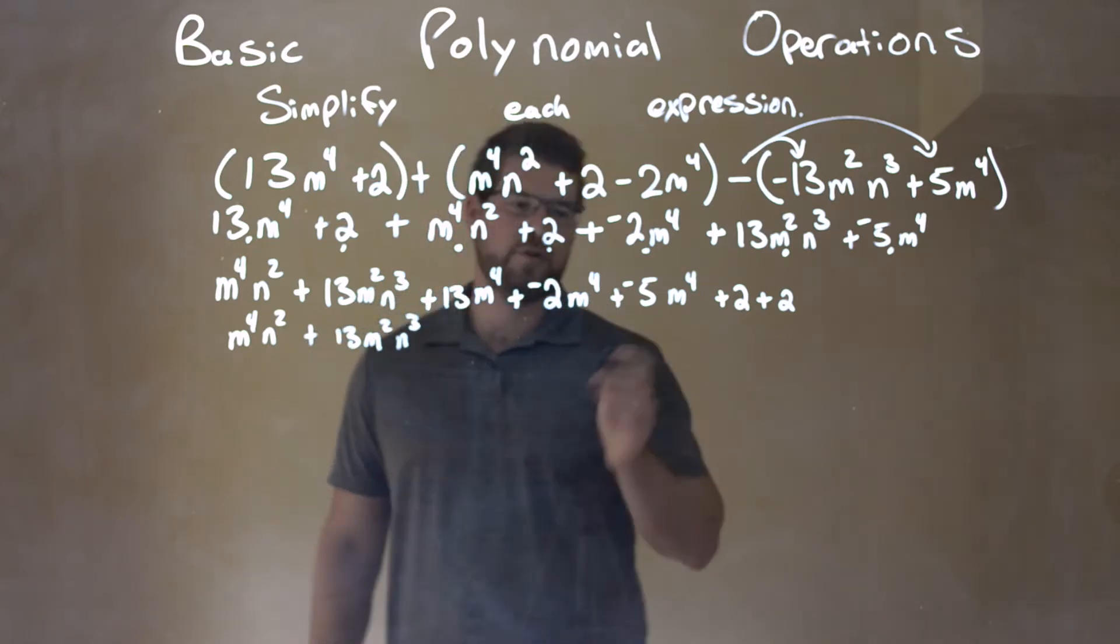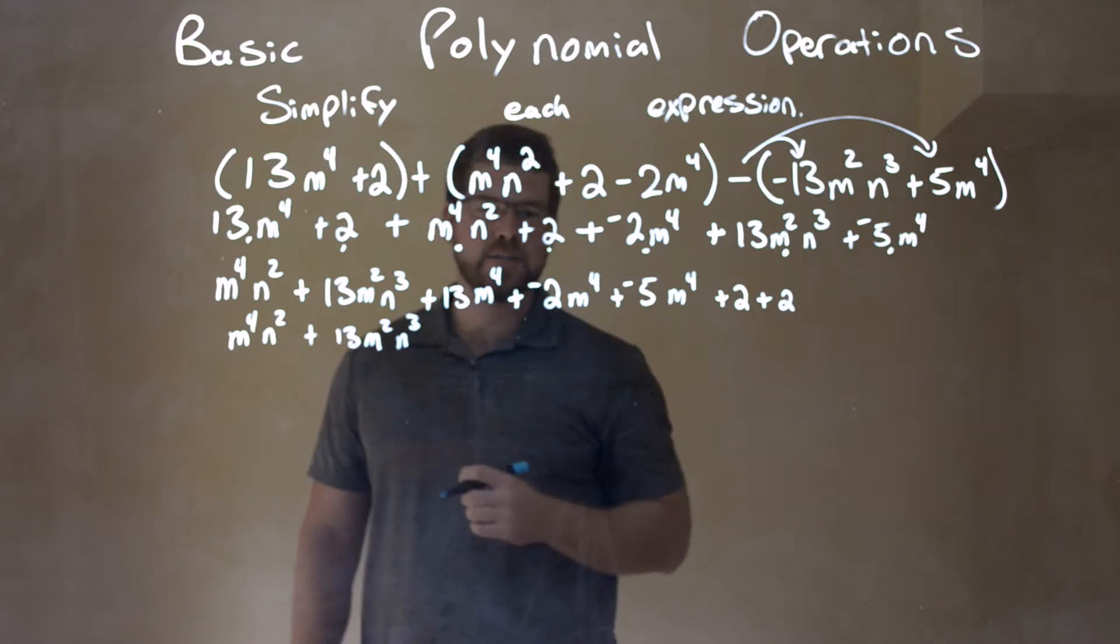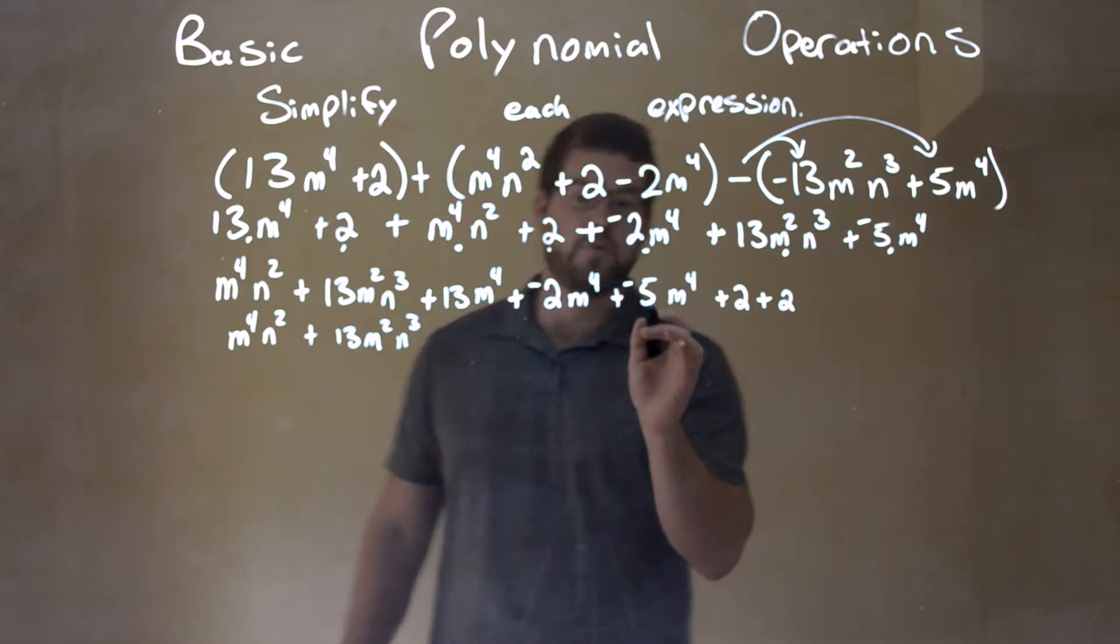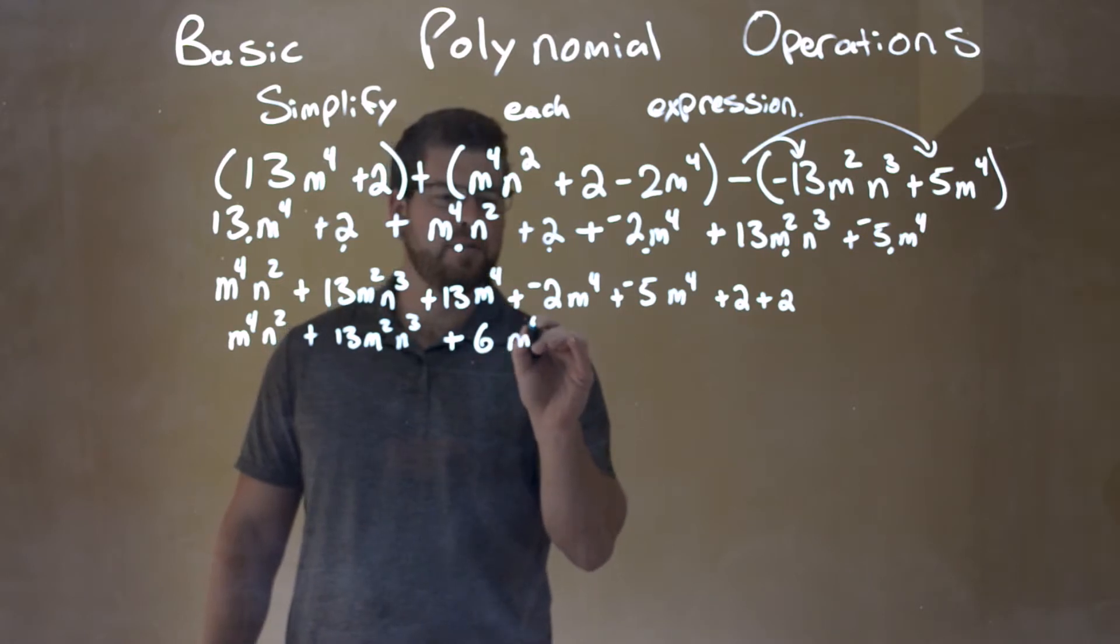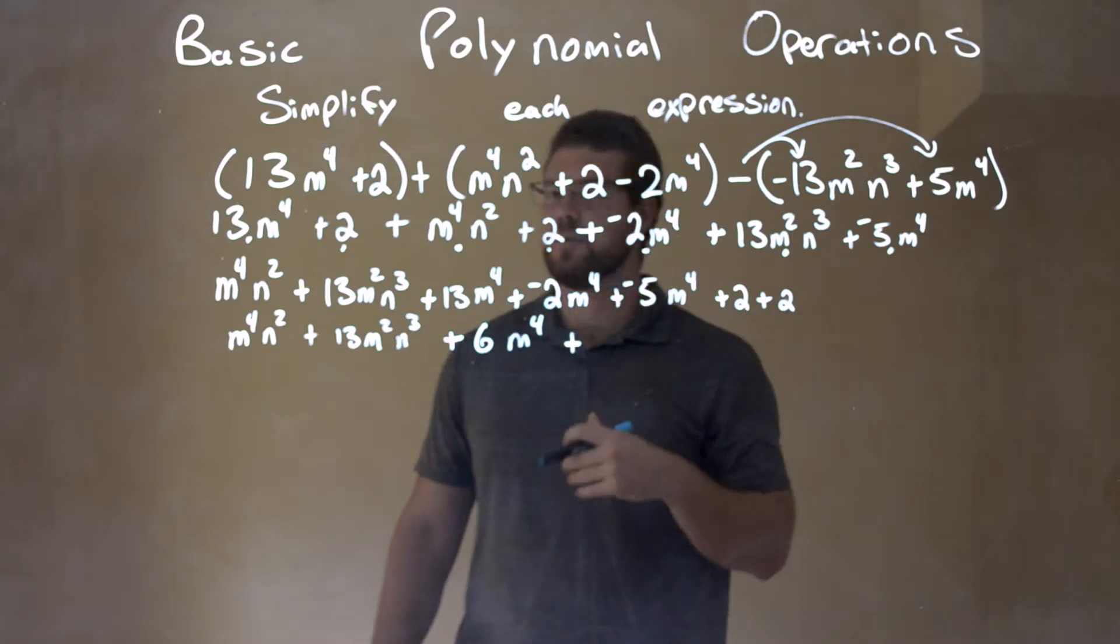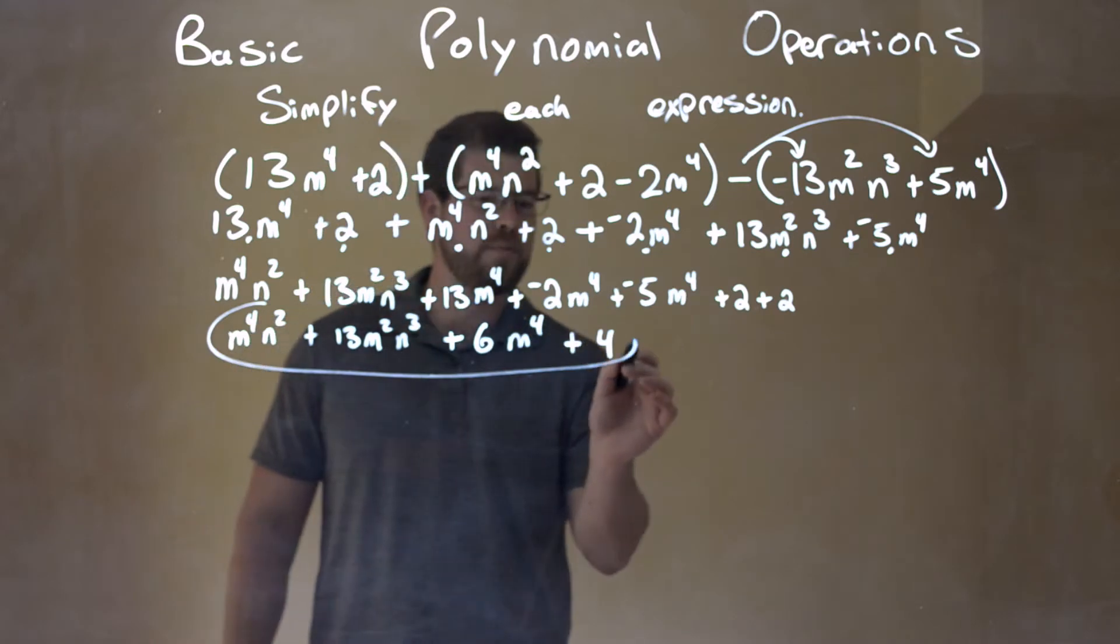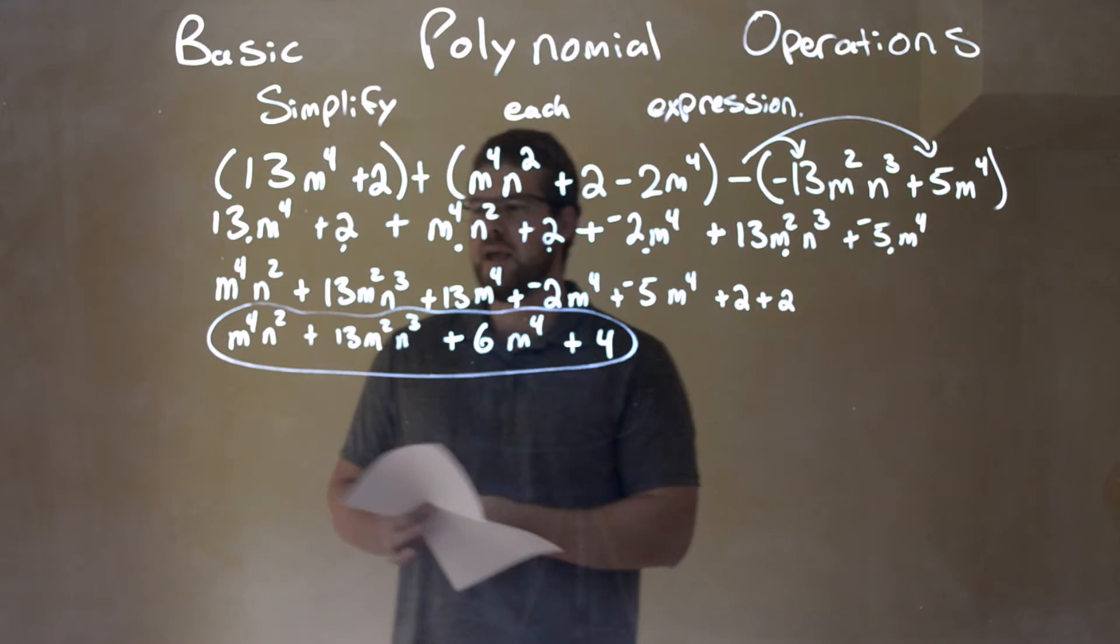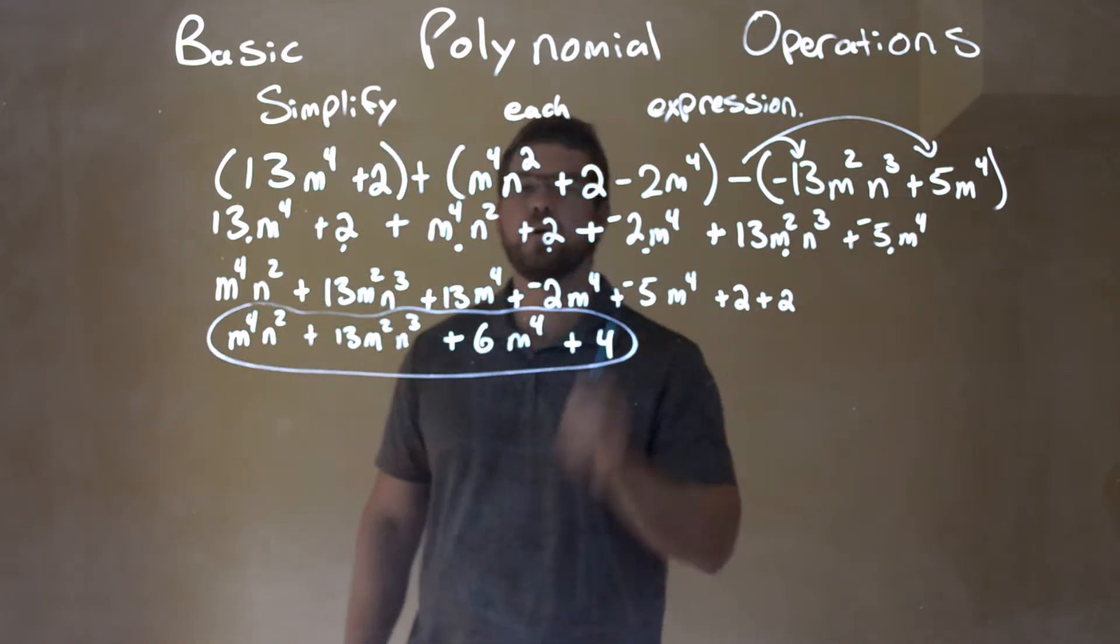But now I have three terms that have m to the fourth power, so we need to combine them. 13 minus or plus a negative 2m is positive 11m to the fourth. And then we subtract a 5, plus a negative 5. So we have 6, plus a 6m to the fourth. That's left over when combining these three. And lastly, we have 2 plus 2 is 4. So now we have our final answer, our simplest form. m to the fourth n squared plus 13m squared n to the third plus 6m to the fourth plus 4.